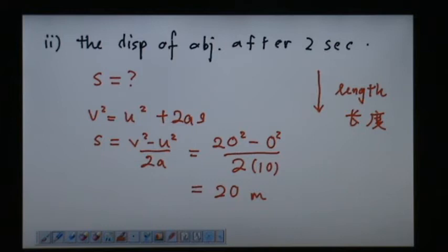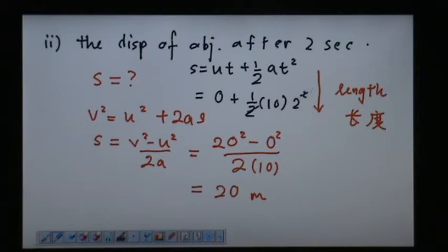Use the proper formula. Of course, you can try another formula, like s equals ut plus half at squared. So u is 0, so the whole thing is zero, and a is 10, and t is 2, so 2 squared - you simplify and get 20 meters. Both formulas are acceptable.